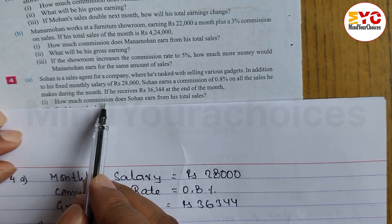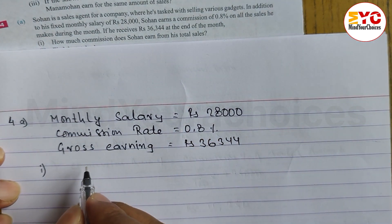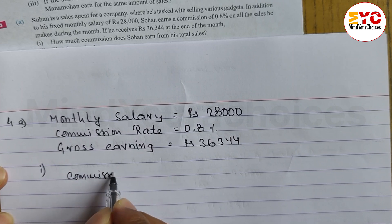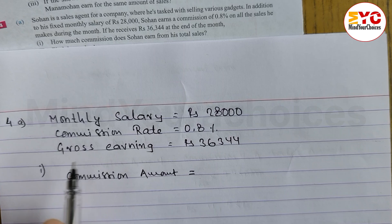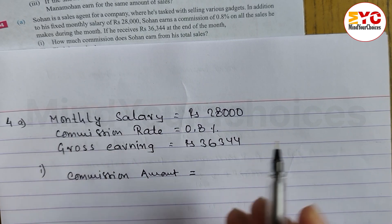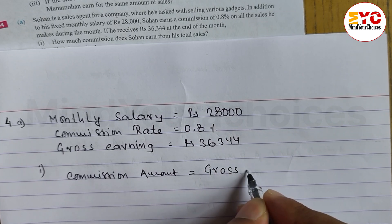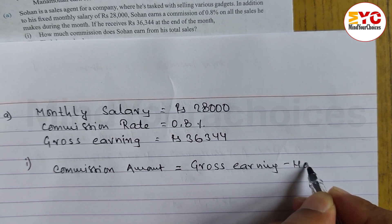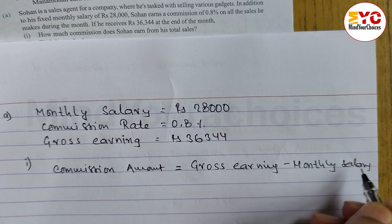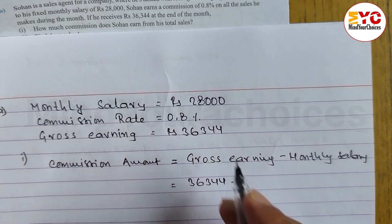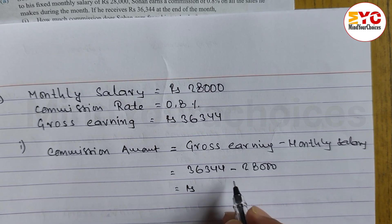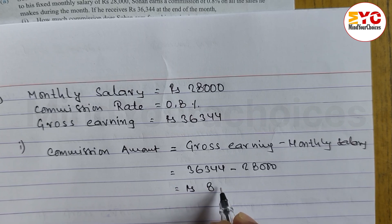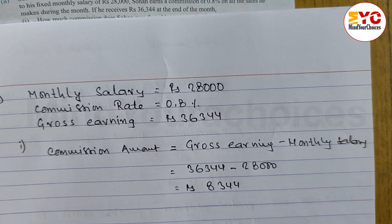Question 1: How much commission does Sohan earn from his total sales? The commission amount formula is: gross earnings minus monthly salary. So Rs. 36,344 minus Rs. 28,000 equals Rs. 8,344. So the commission amount is equal to Rs. 8,344. Hope you understand this one.